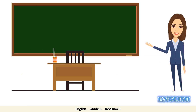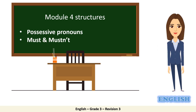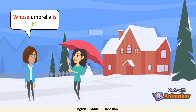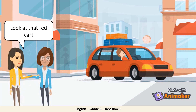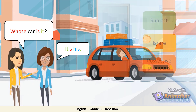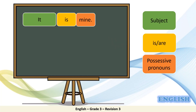Now let's go through module 4 structures: the possessive pronouns and must and mustn't. Let's start with the possessive pronouns. When do we use them? We use them to show that something belongs to someone. Whose umbrella is it? It's mine. Look at that red car. Whose car is it? It is mine to say that it belongs to me.